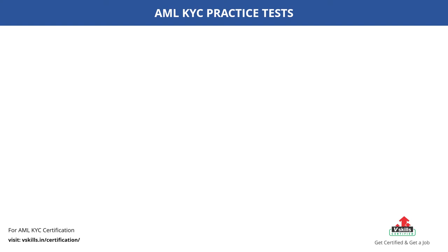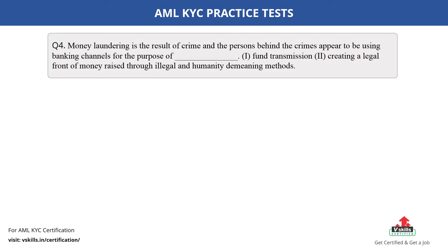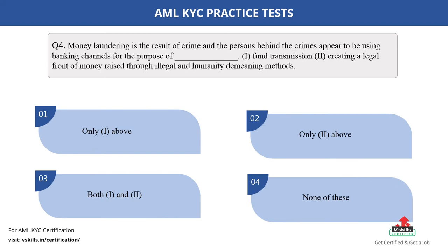Question number 4. Money laundering is the result of crime, and the persons behind the crimes appear to be using banking channels for the purpose of — 1. Fund Transmission; 2. Creating a legal front of money raised through illegal and humanity-demeaning methods. Fill in the blank. The options are: A. Only one above; B. Only two above; C. Both one and two above; D. None of these. The correct answer is option C.